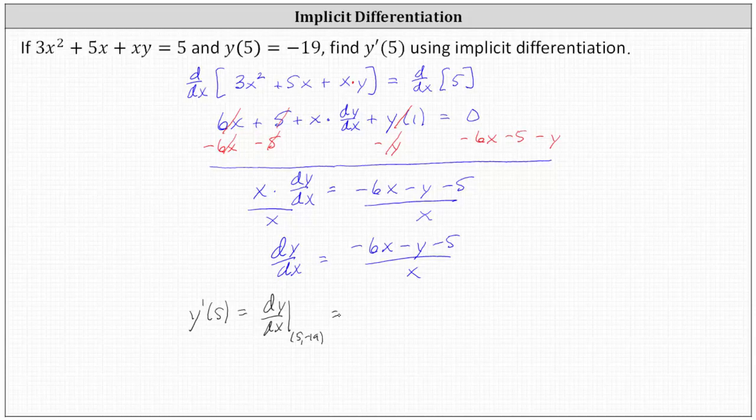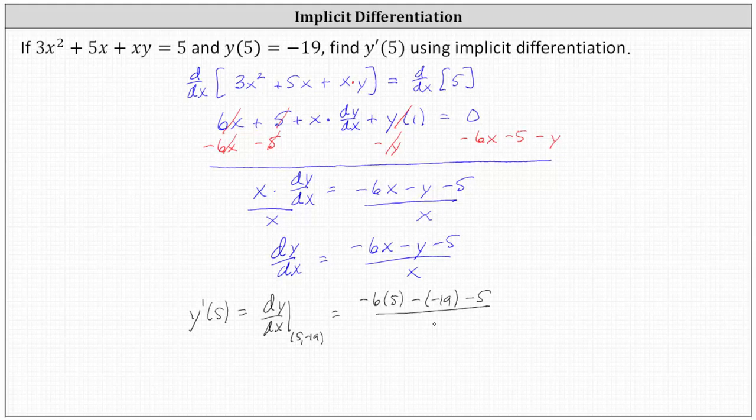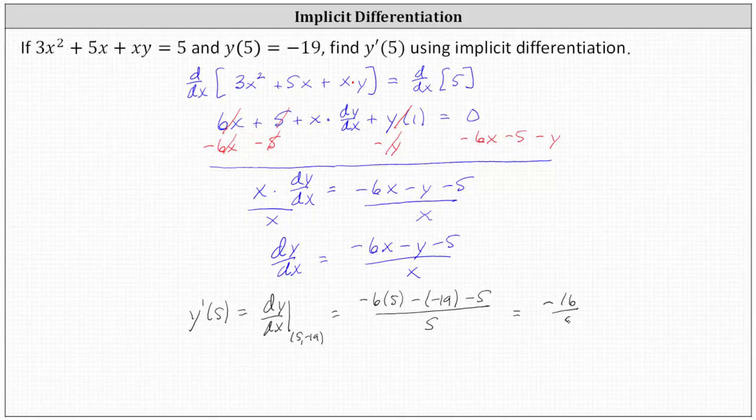So we substitute five for x and negative 19 for y, which gives us negative six times five minus negative 19 minus five, all divided by five. Simplifying in the numerator, we have negative 30 plus 19, which is negative 11 minus five, which is negative 16, giving us negative 16 fifths.